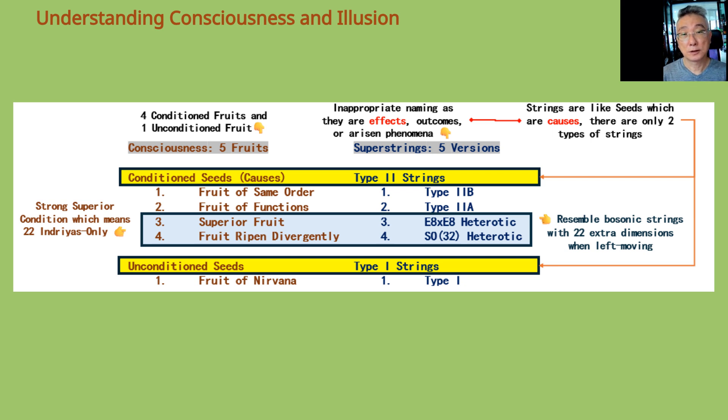The two heterotic strings, E8 times E8 and SO32, are also type 2 strings, but only because when they left moving, they resemble bosonic strings with 22 extra dimensions. In the terms of Yogacara Buddhism, they have stronger superior conditions, as seen in their corresponding fruits, superior and ripened divergently, where there are 22 indriyas only.